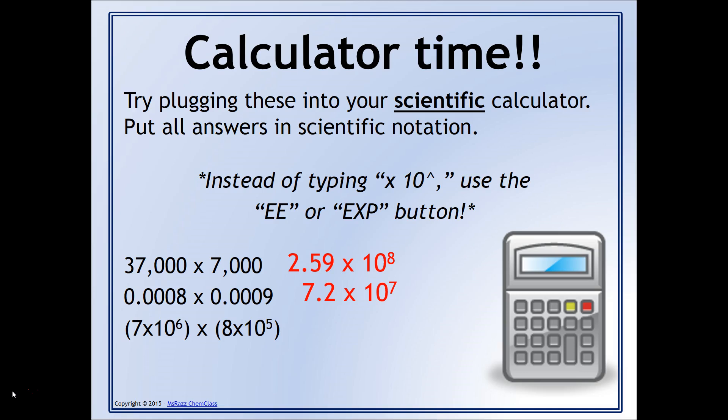And then for your calculator 8 times 10 to the 5, you're going to want to type in 8EE or EXP 5. Notice when you do this, if you're using that EE or EXP button, you do not need the times 10 at all. By just putting the 5 in there, that works. And so when you do that, you should get that answer.